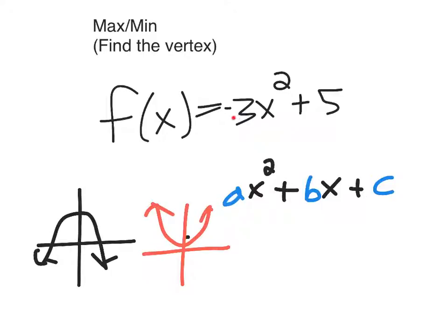So if a is negative, your vertex is going to be the maximum. If a is positive, your vertex is going to be right here, so it's going to be a minimum on this type of function. So in this case, a is negative, so the vertex that we find is going to be a maximum for this function.